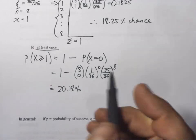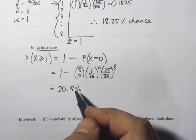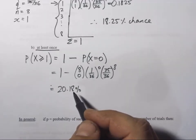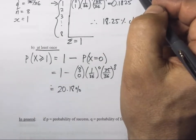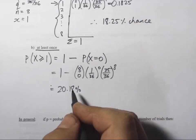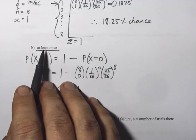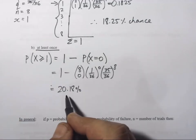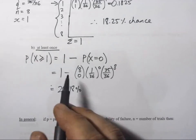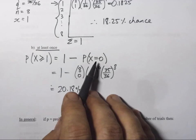Does that make sense logically? It's a very rare thing to roll a double six — not very common. So in order to get a double six once, twice, three times, et cetera, the probability is going to be a pretty low amount. For at least once, the indirect method is the much easier way to figure that out.